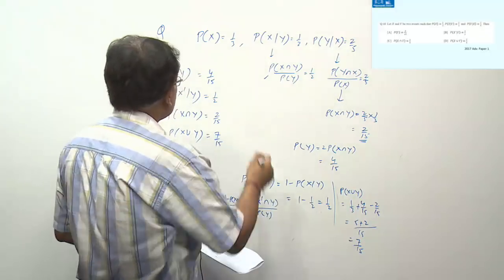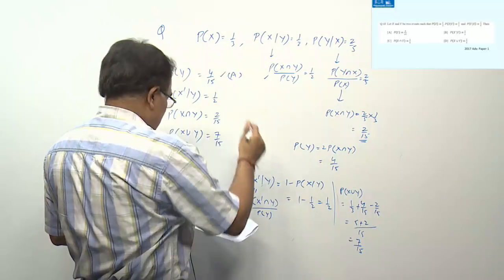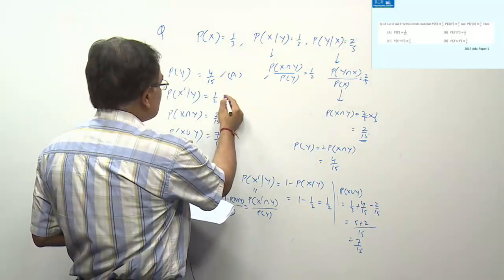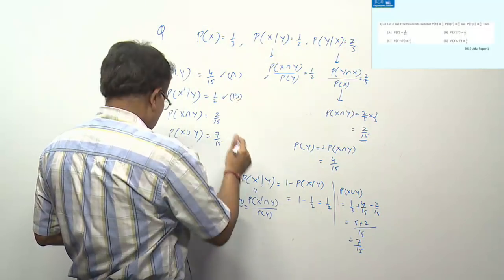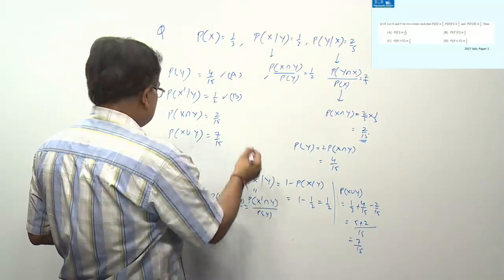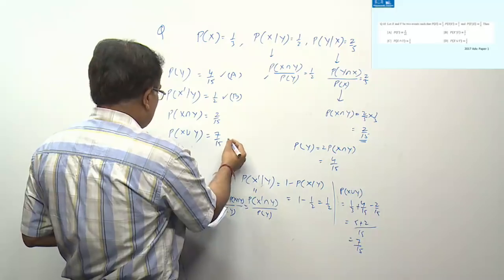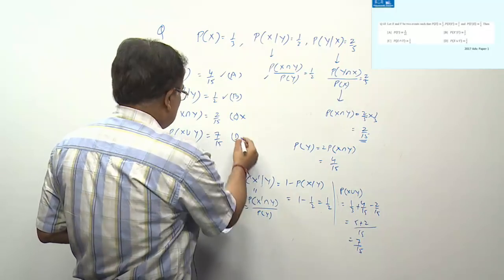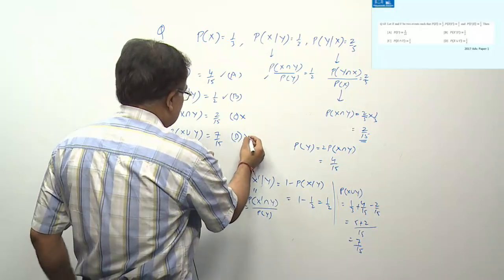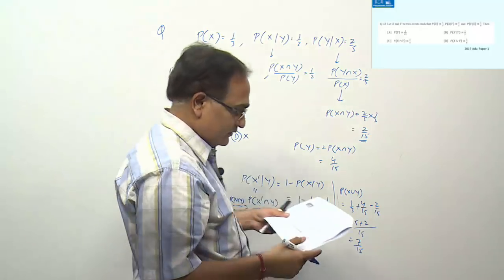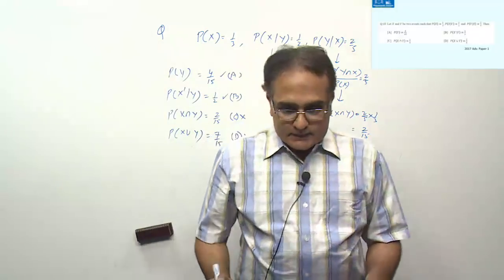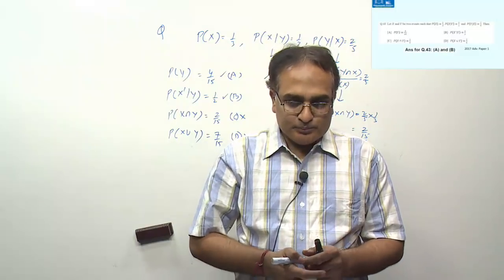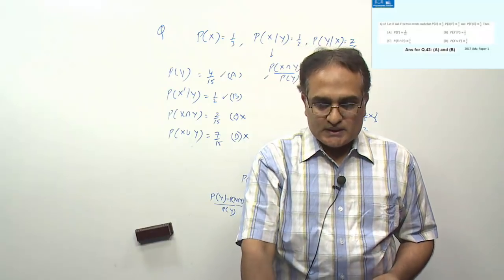Checking the options: P(Y) is 4/15 (not 2/15 or 1/15), so options giving wrong P(Y) are false. P(Xᶜ|Y) = 1/2 is true (option A). P(X∩Y) = 2/15, not 1/5 — option B (1/5) is false. P(X∪Y) = 7/15, not 2/5 — option D is false. The official answer key is A and B... actually the correct answers are A and the correct P(X∩Y). Official answer keys are A and B.